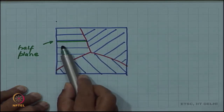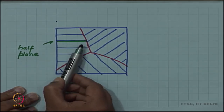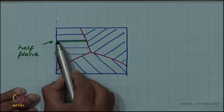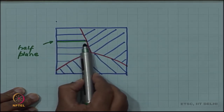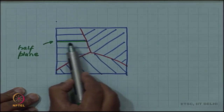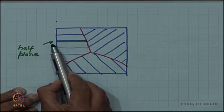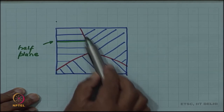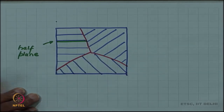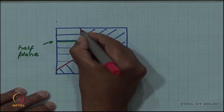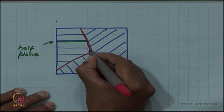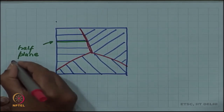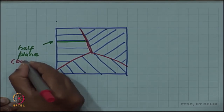The dislocation line, which is the bottom edge of this half plane, also cannot cross the grain boundary. The bottom edge of this half plane — the dislocation line — will start on the free surface but will not go all the way to the other free surface; it is interrupted by the grain boundary. This grain boundary interrupts the dislocation line.